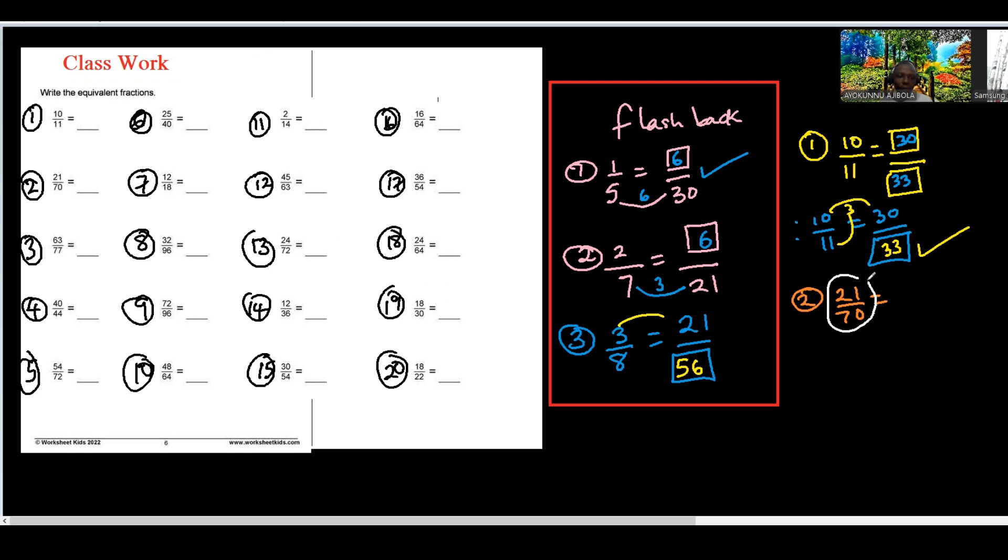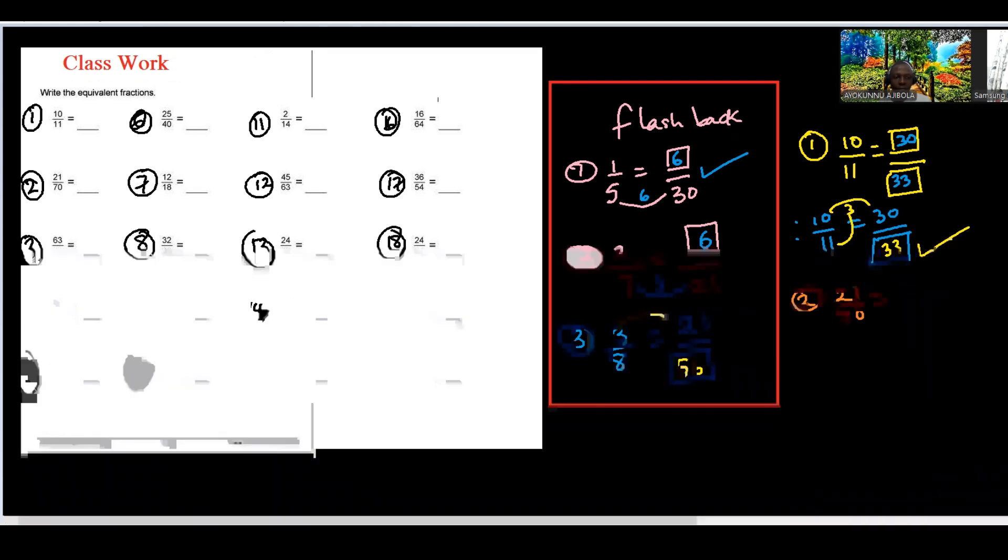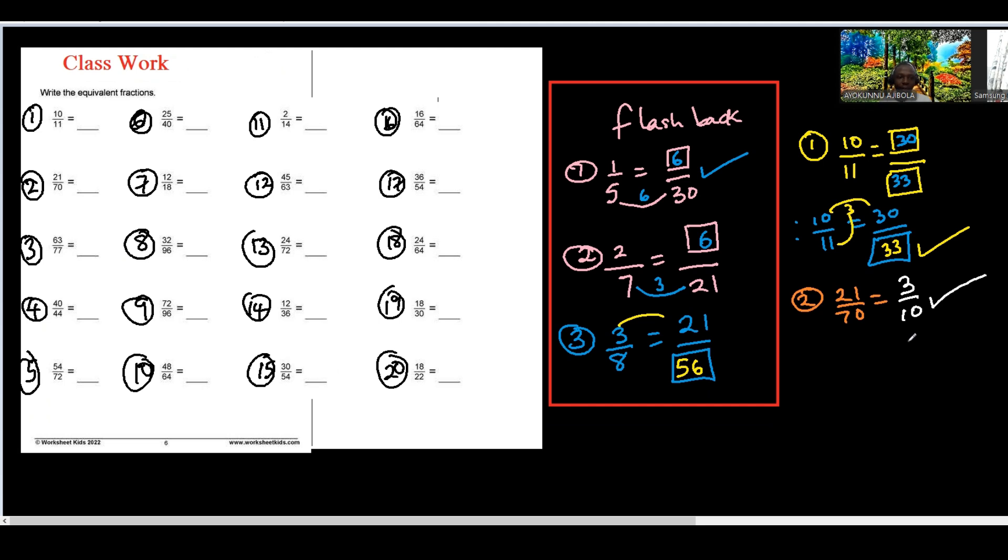But here now, there's a factor common to them. So we'll get a lower version when we use the factor. So 7 into 21 is 3, and 7 into 70 is 10. So what is the fraction we want to write? 3 over 10. Is that clear? Yes, sir.